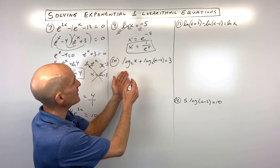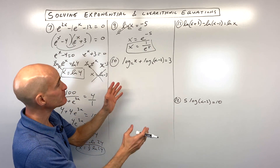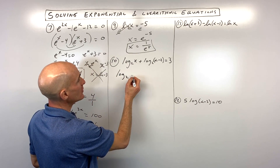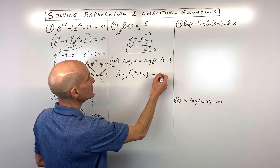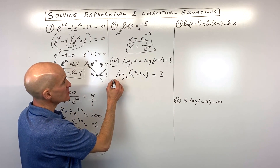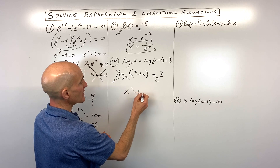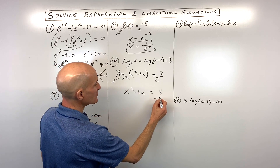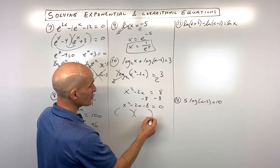For number 10, a little more challenging: log base 2 of x plus log base 2 of x minus 2 equals 3. Use condensing properties to combine into one log: log base 2 of x times (x minus 2), which is x squared minus 2x, equals 3. Remember, when you add logs you multiply the arguments. Now do the inverse of log base 2 — exponentiate both sides using base 2. These are inverses, giving x squared minus 2x equals 2 cubed, which is 8.